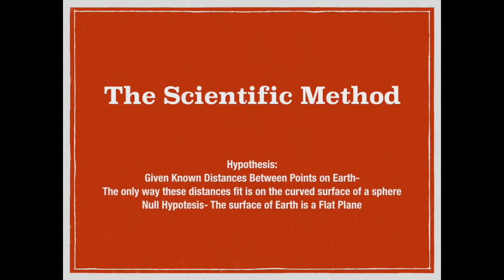In this case, we have observations of known distances between locations on Earth and try to fit them all together. Given known points on the Earth, the only way to connect these points is on a curved surface of a sphere. The null hypothesis is that Earth's surface is flat and we don't need to curve any lines. As we saw, that doesn't work out — we've pretty much disproved the null hypothesis.